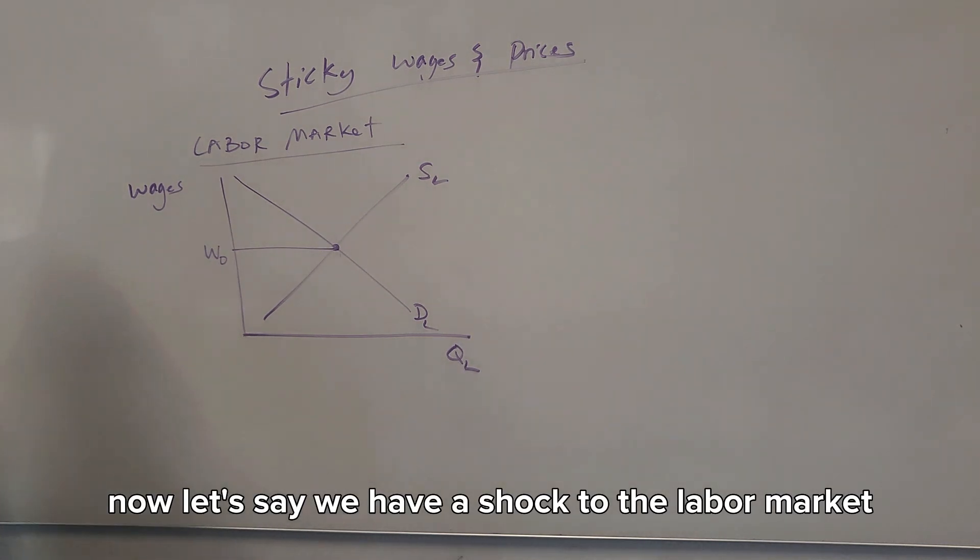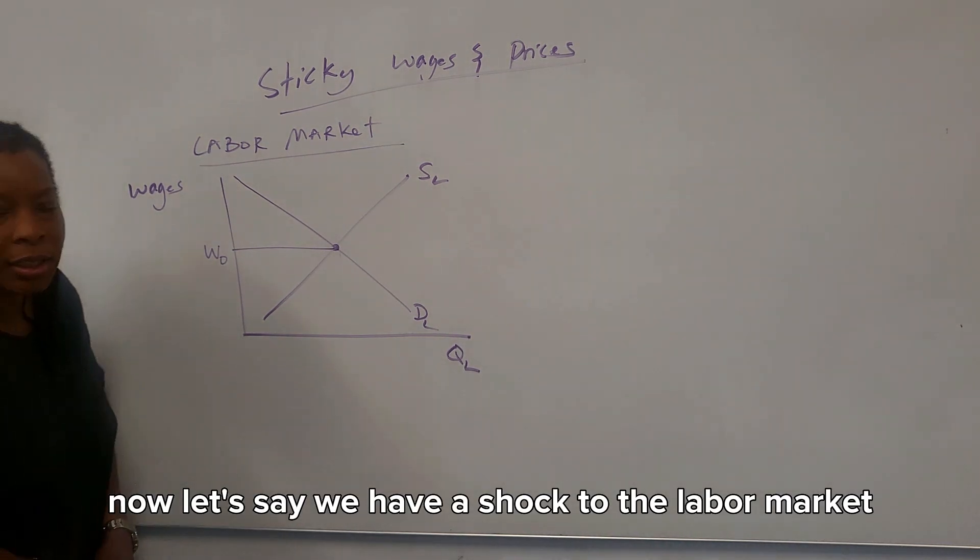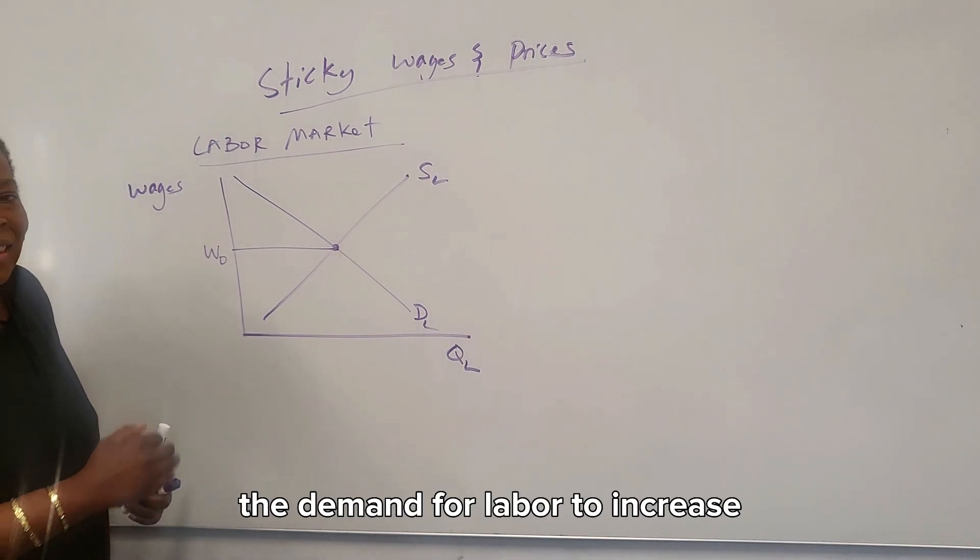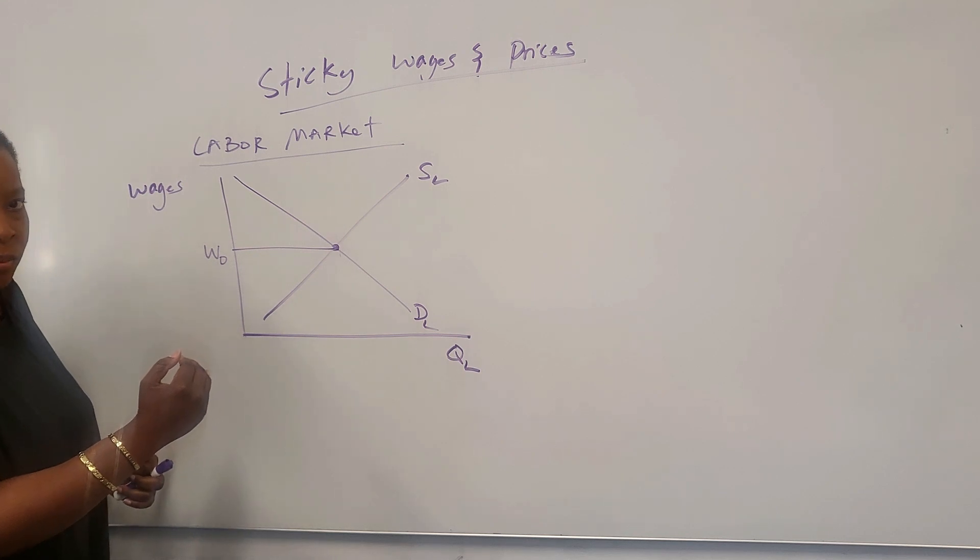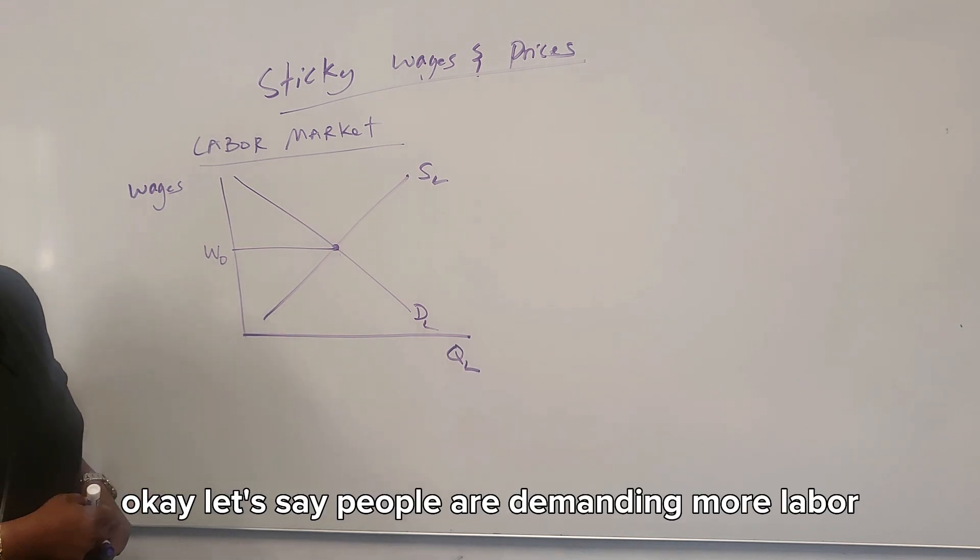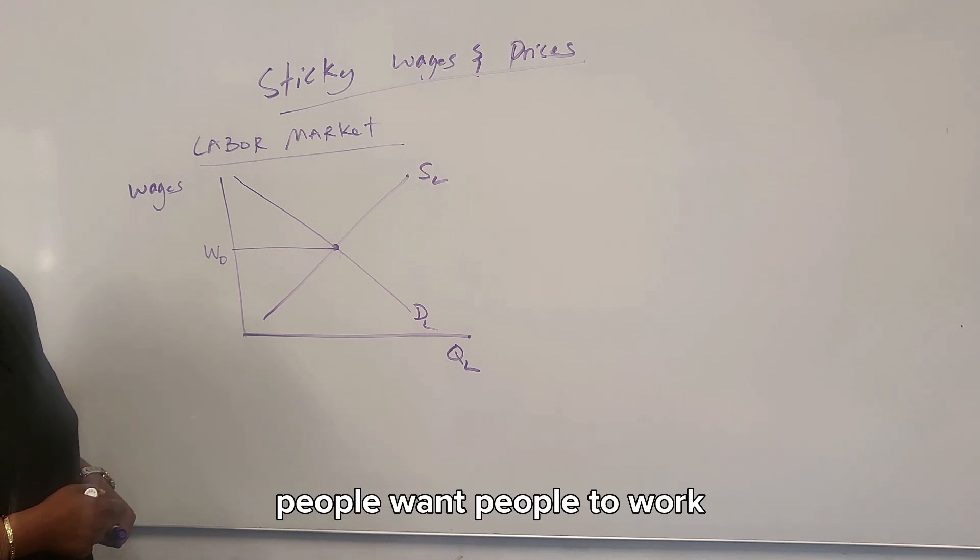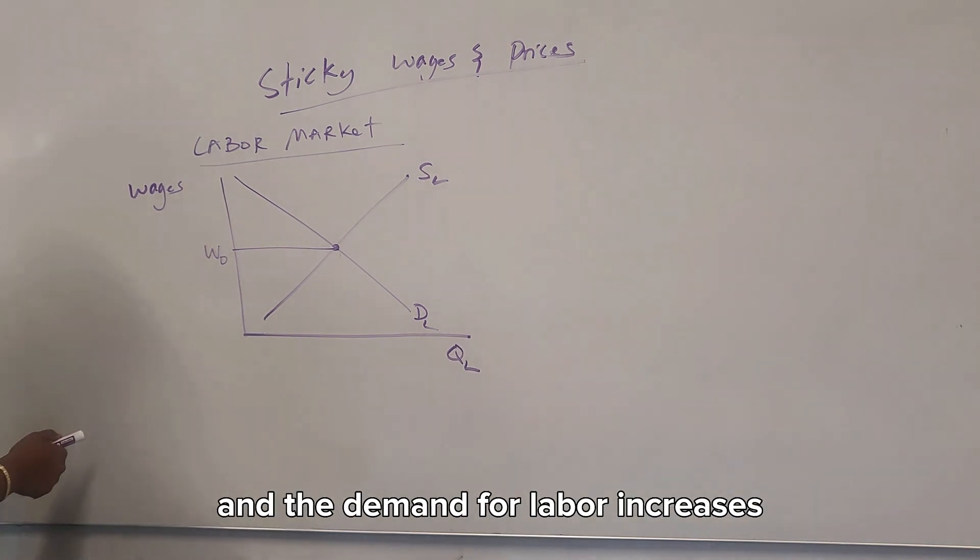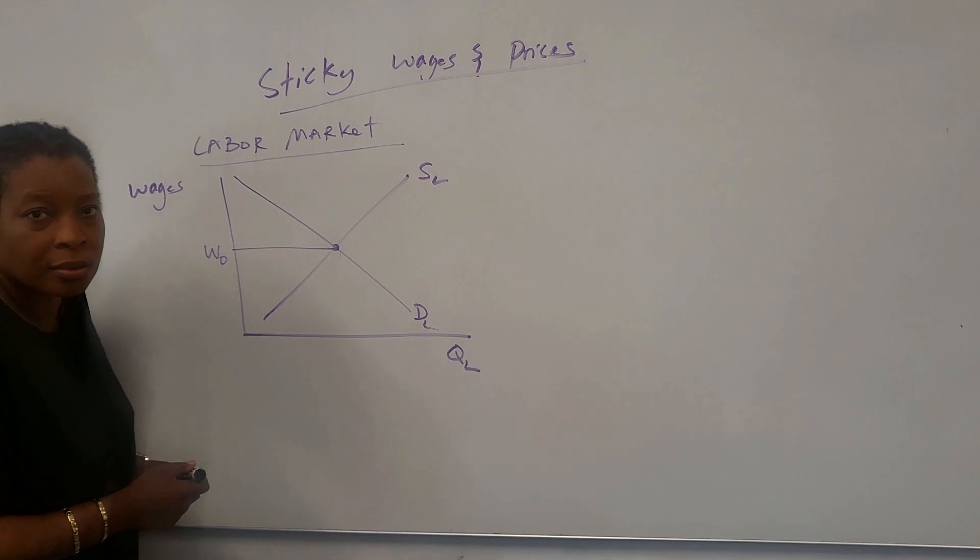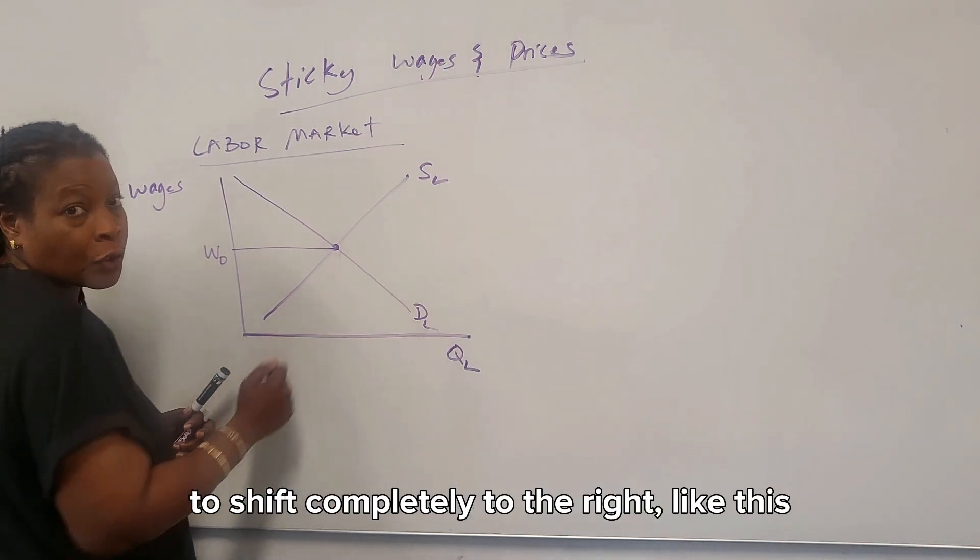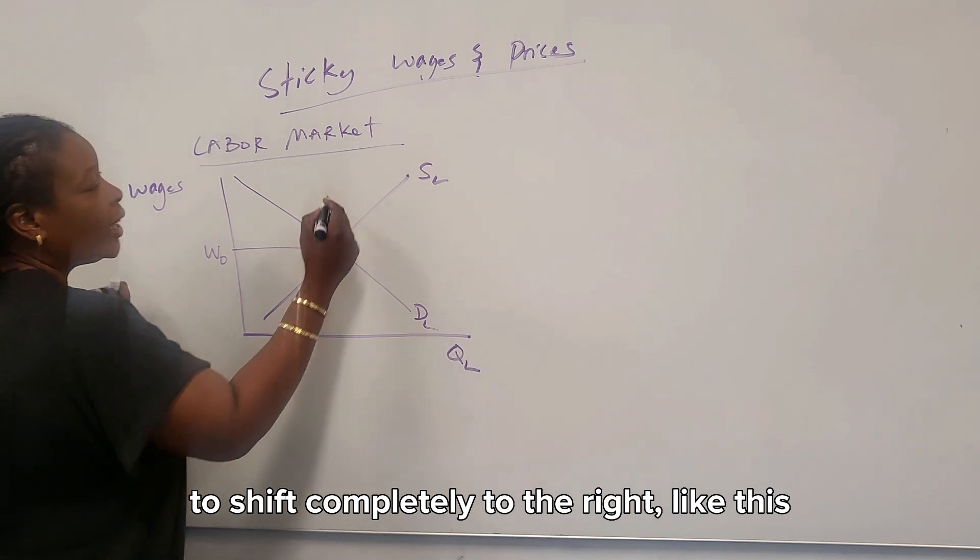Now let's say we have a shock to the labor market. Let's say this shock causes the demand for labor to increase. People are demanding more labor. People want people to work. Now the idea here is if we have a shock to this market and the demand for labor increase, how would we show this? Well, we know increases would cause the demand curve to shift completely to the right, like this.